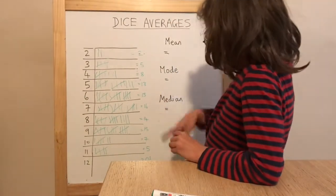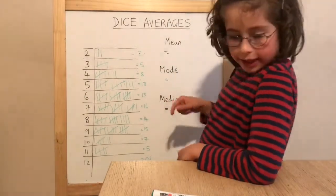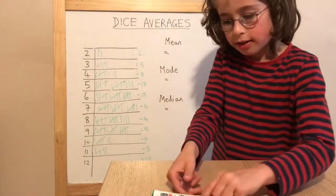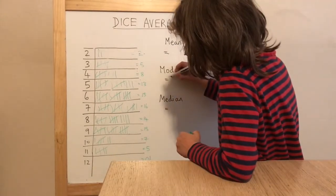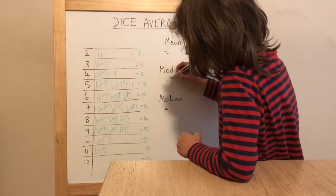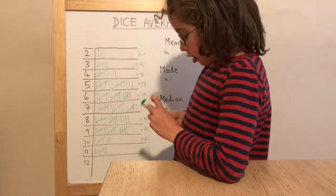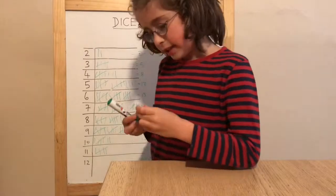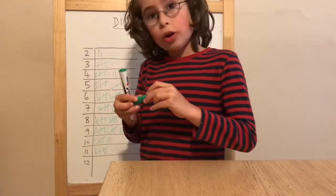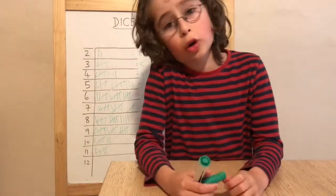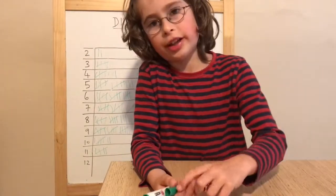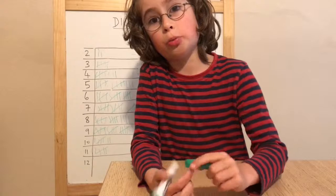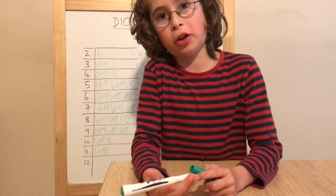The mode is seven. The mode means which one got the most points — like which one was the most popular.